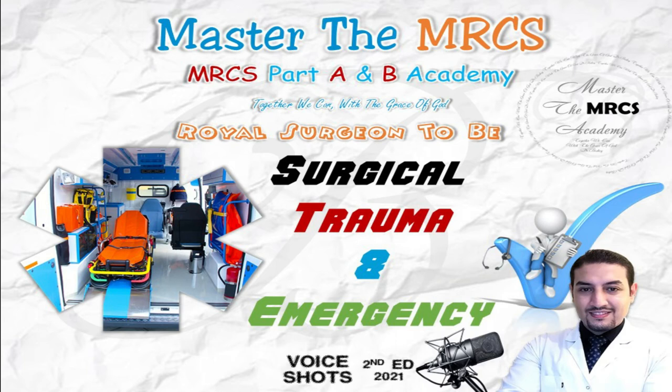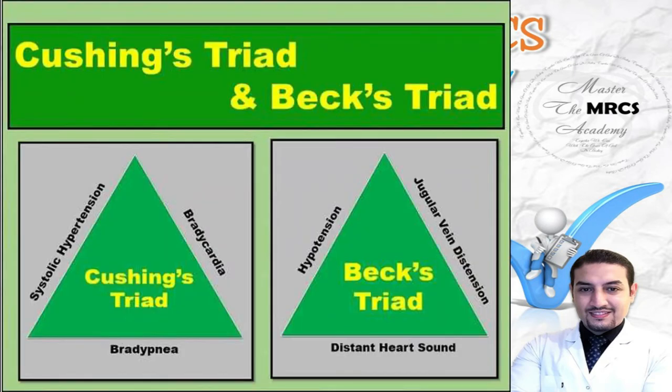Don't confuse Cushing's triad with Beck's triad. Beck's triad is for cardiac tamponade; Cushing's triad is for increased intracranial pressure. Cushing's triad: bradycardia, bradypnea, and systolic hypertension. Beck's triad: hypotension, jugular venous distension, and muffled (distant) heart sounds.